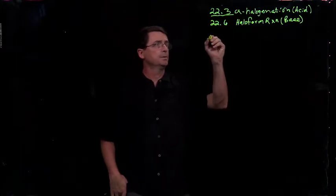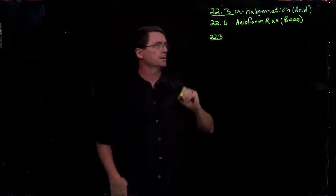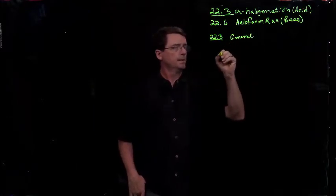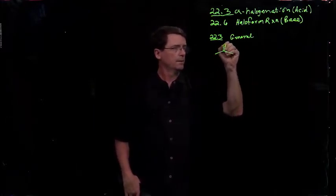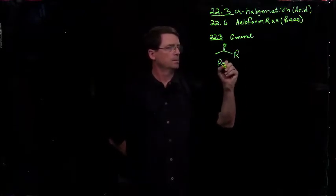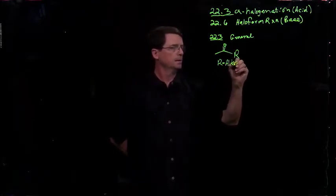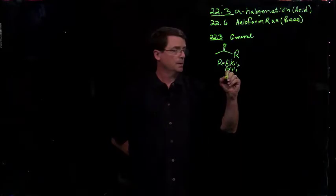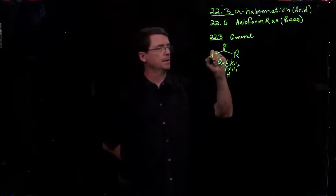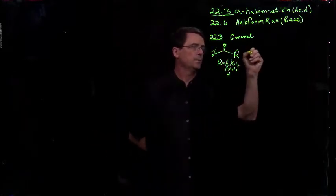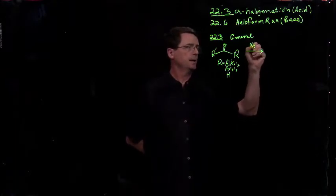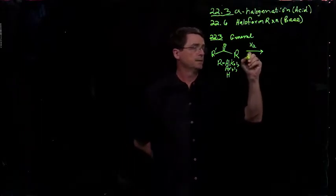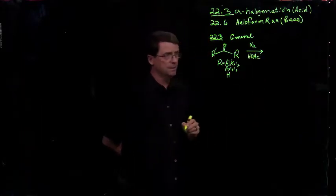First at 22.3, so you know where in the text to look. The general reaction is here. R can equal alkyl, aryl in which case they're ketones, or H in which case we're dealing with an aldehyde. If you react those with a halogen, most commonly is bromine and bromination under acetic acid conditions are typical.